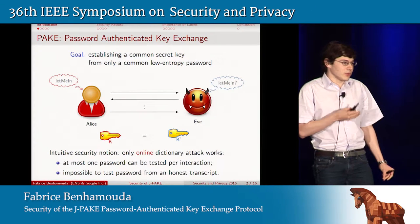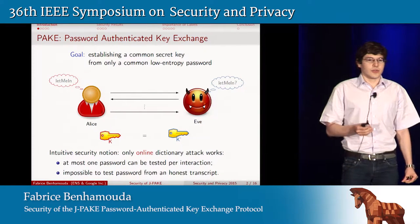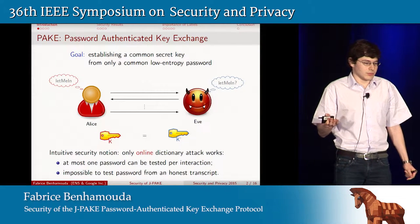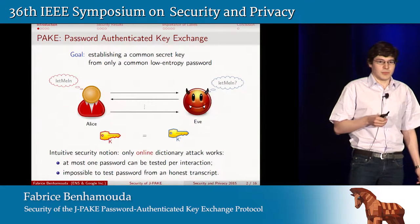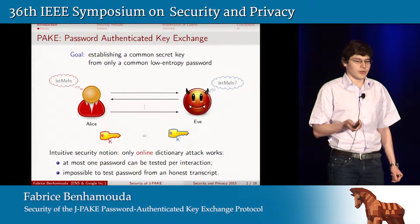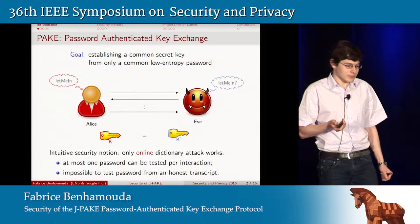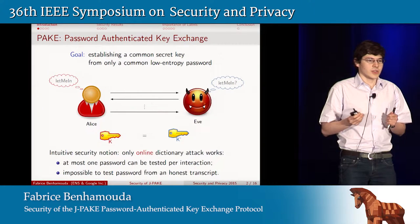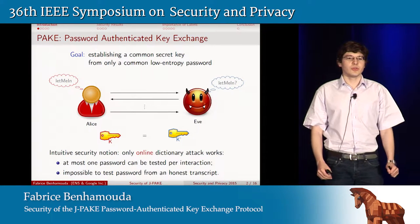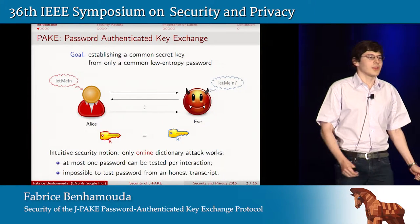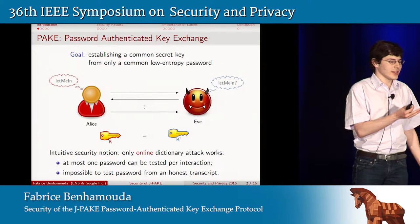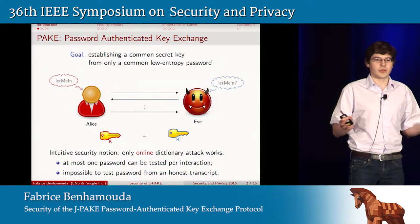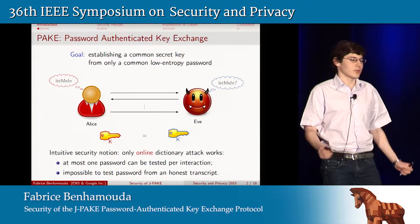Basically, what we want is that this online dictionary attack is the most powerful attack possible. In particular, it should be impossible for Eve to look at the transcript between Alice and Bob and check whether this transcript corresponds to a given password — because if that's the case, she can just run her computer and find out which password was used by Alice and Bob, and that's terrible.